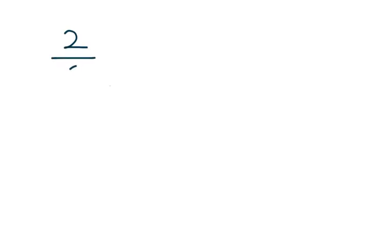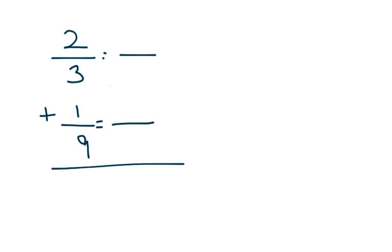For an example problem, we have two-thirds plus one-ninth. So the first thing you want to do is find a common denominator. We found the least common denominator last week, where we took the largest number — the nine — and found its multiples: nine times one was nine, and three does go into nine, so that is the least common denominator. If you ever get stuck, the biggest problem for most people with adding and subtracting is having common denominators, so you can always take the two bottom numbers — the three and the nine — and multiply them together to get 27.